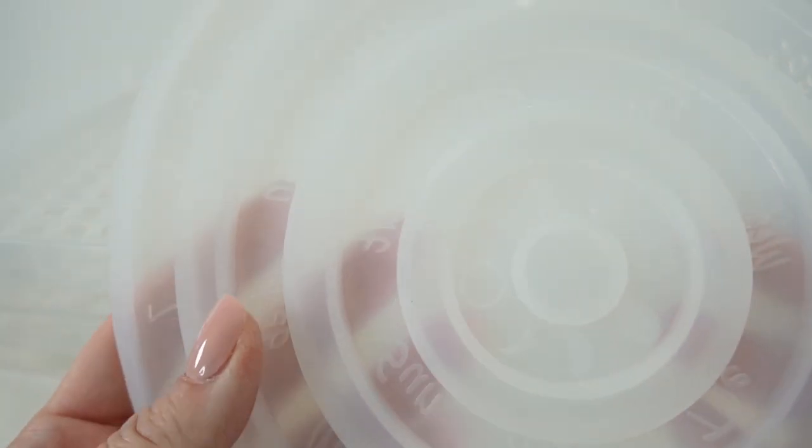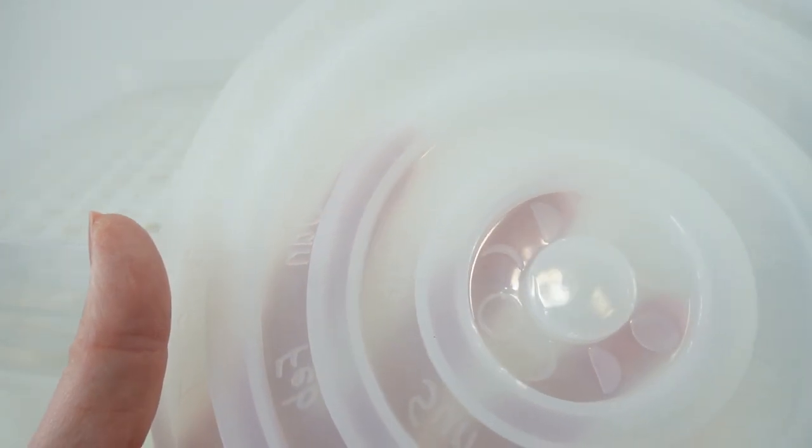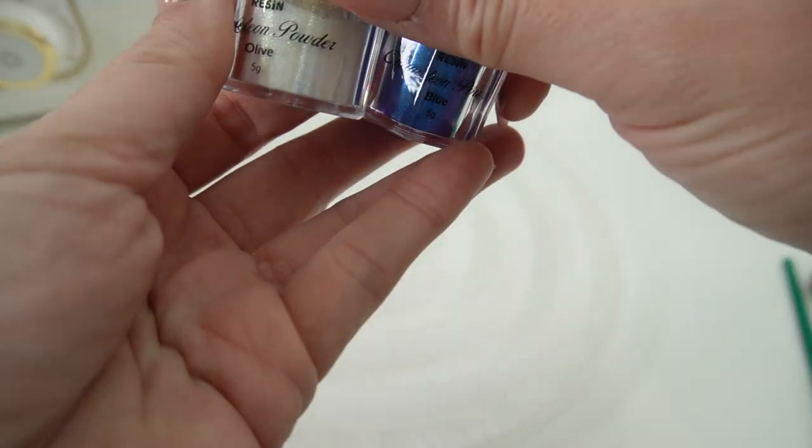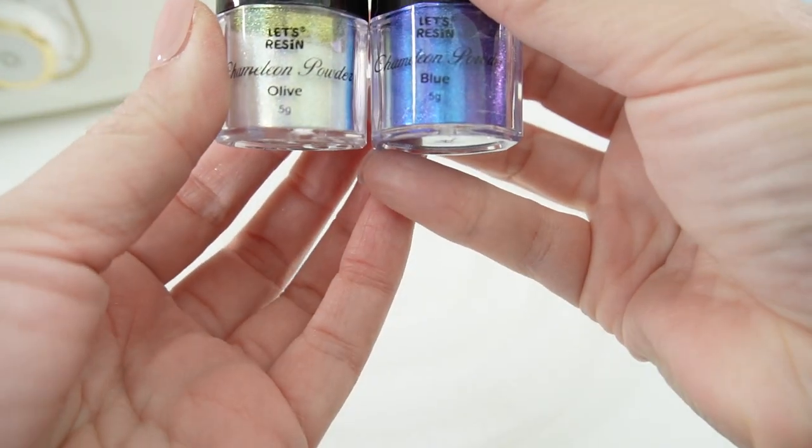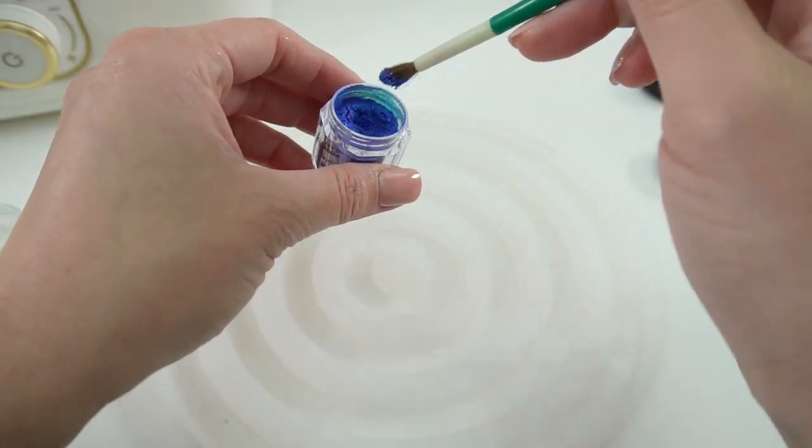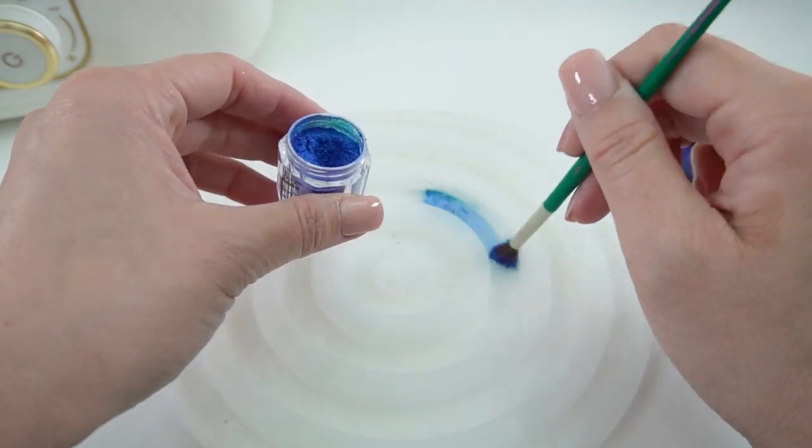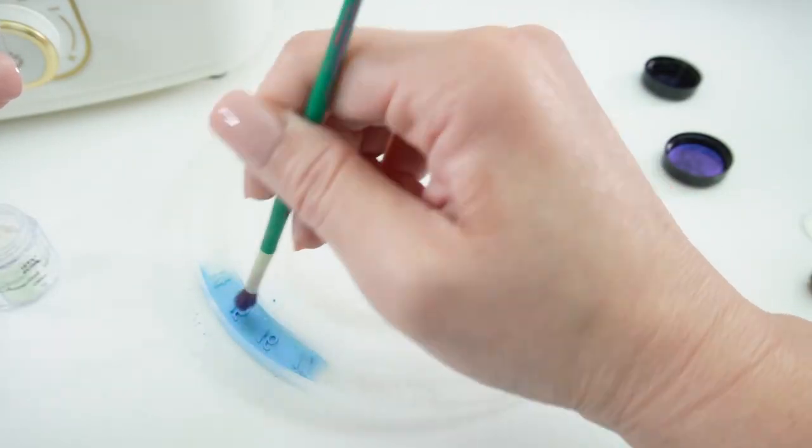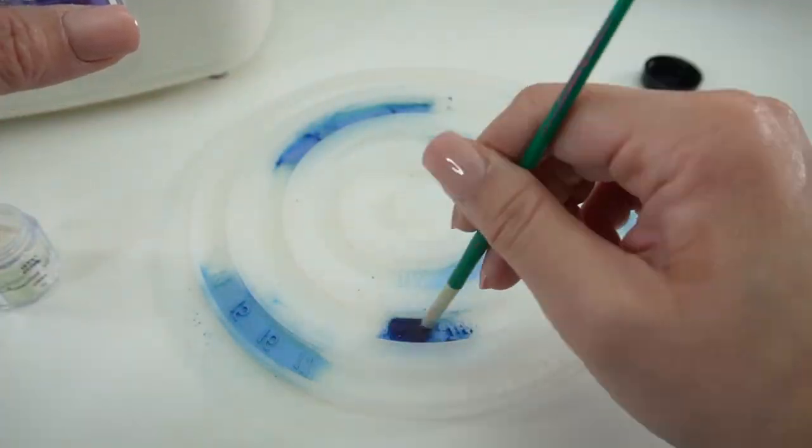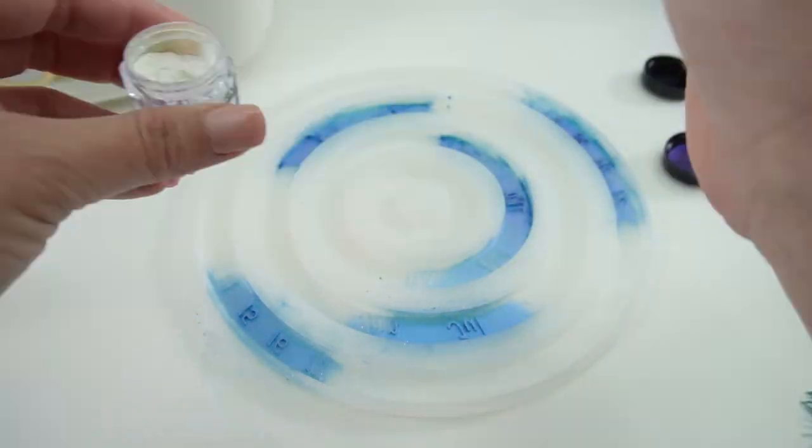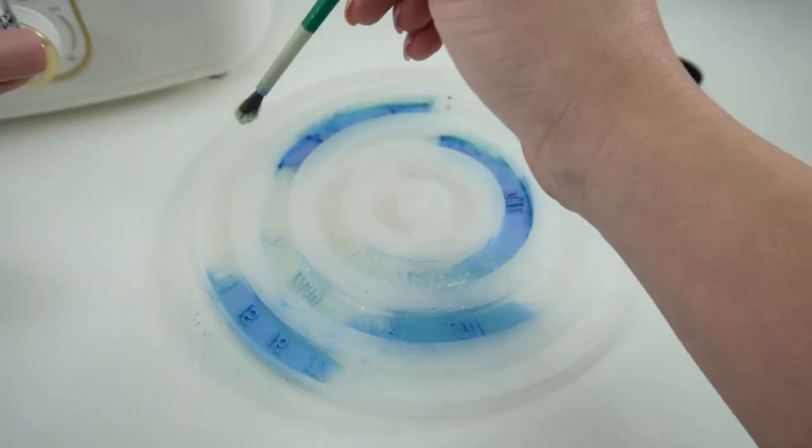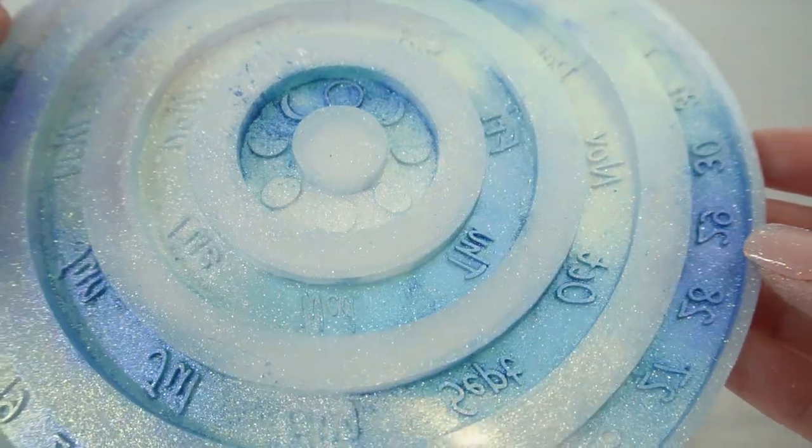And before we do the middle piece let's go ahead and paint it with some mica powder. So we're going to be using two colors, I have olive and blue. We're going to take our powder and just paint the insides like this and you want to make sure to get the sides too.